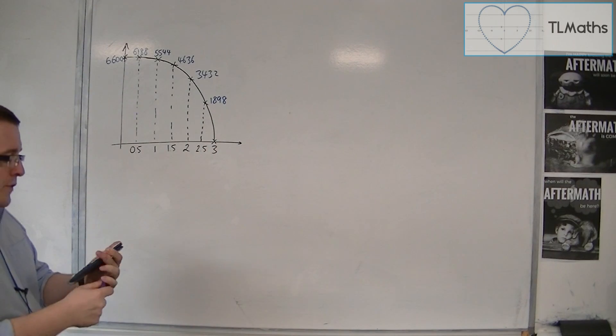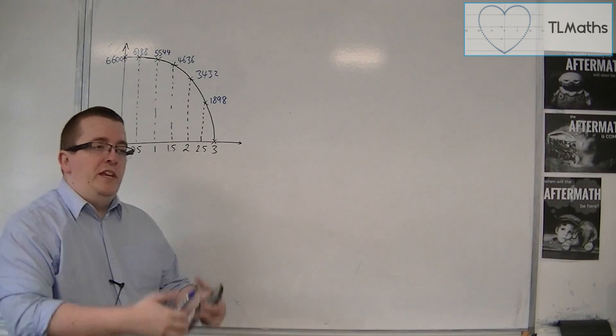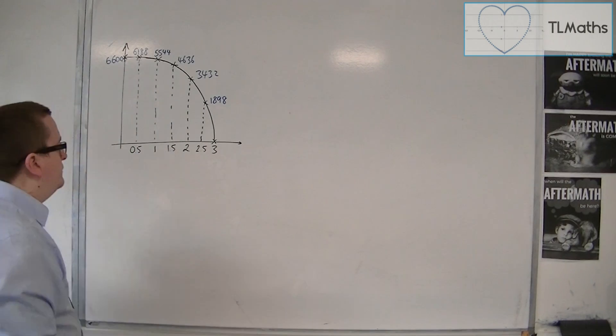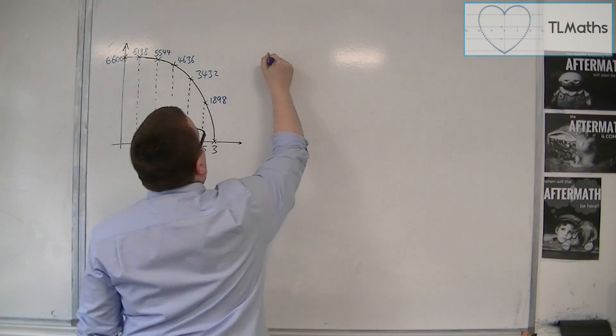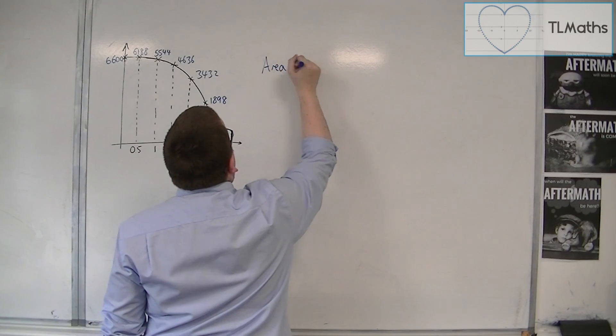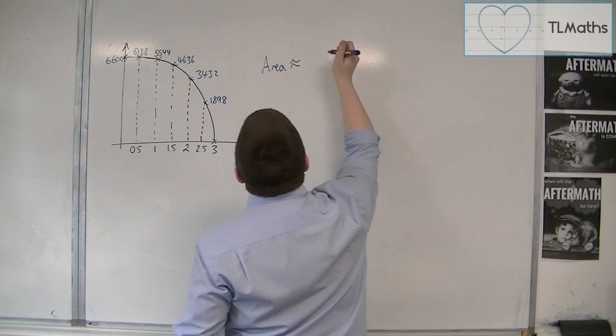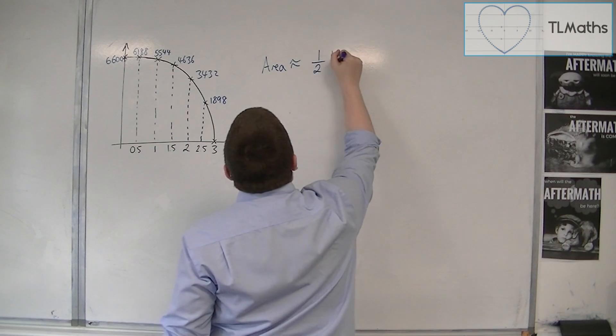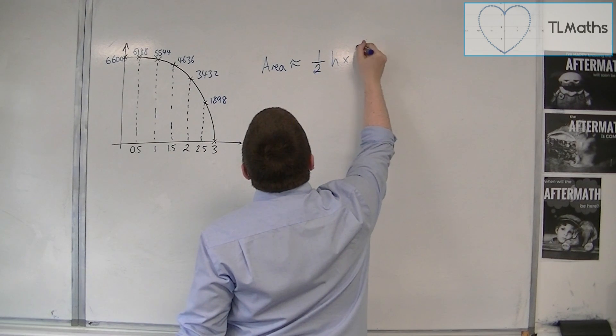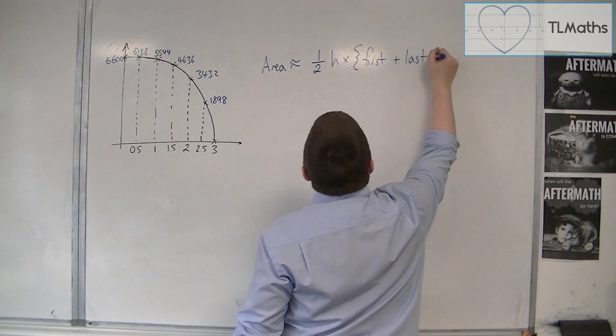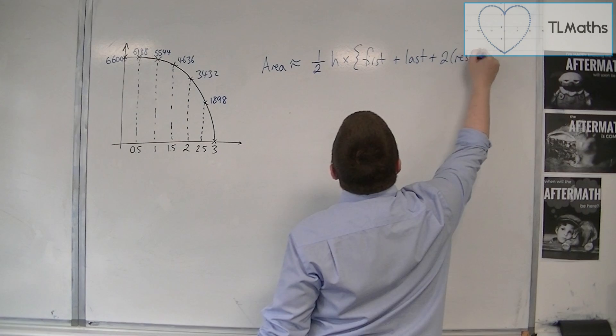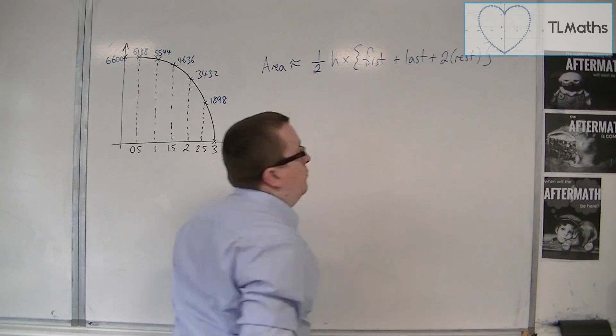So the formula for the trapezium rule works like this, where we've got the area underneath the curve is approximately 1/2 h times the first plus the last plus 2 lots of the rest. That's what I'm working from here.